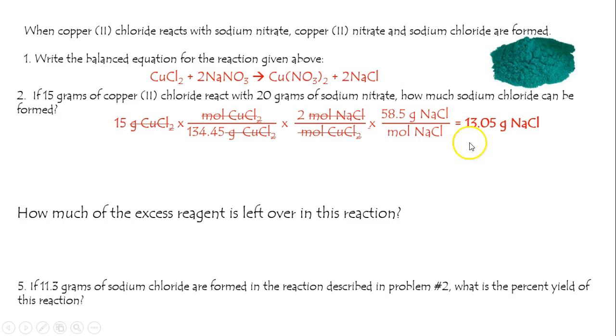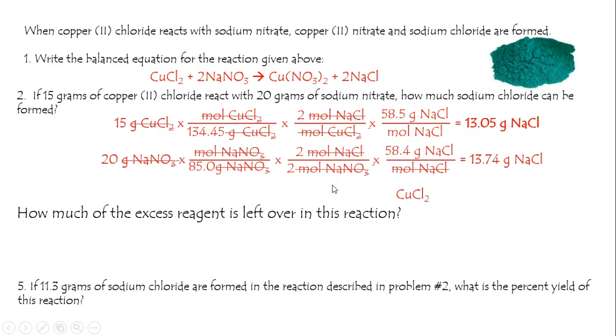We have enough copper chloride to make 13.05 grams of sodium chloride. We have enough sodium nitrate to make a little bit more. So it turns out that it was fairly close. This is the answer to the question. After you've made 13.05 grams of table salt, you've run out of copper chloride.